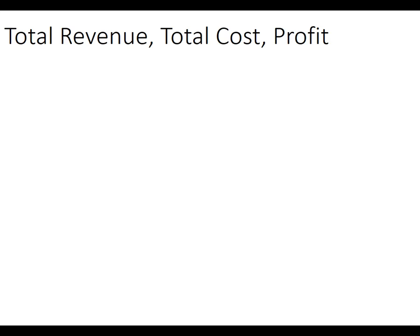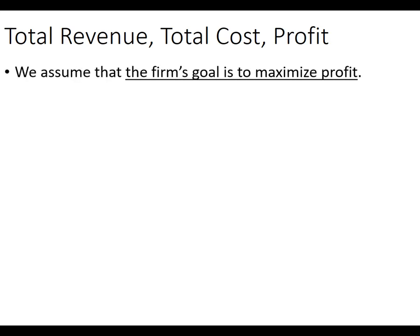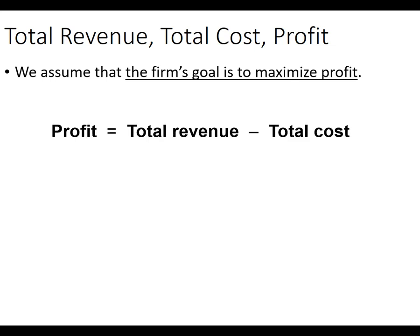So: total revenue, total cost, profit. We make the assumption in economics that every firm — and really every person — is trying to maximize profits. They're trying to get the most bang for their buck. Whatever money they spend needs to translate into more total revenue. For Facebook, you want to do this so that Wall Street rewards you with a higher stock price. The formula for profit is: profit equals total revenue minus total cost.